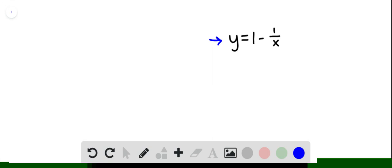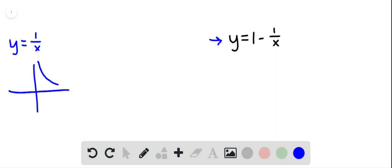Our goal is to graph y equals 1 minus 1 over x, so I'm going to start by thinking about the graph of y equals 1 over x. That's our standard reciprocal function and it looks like this.